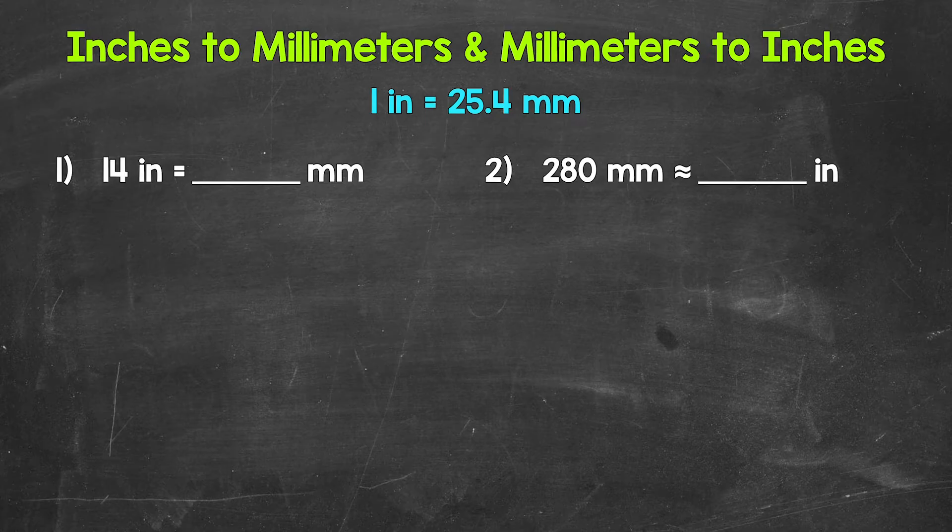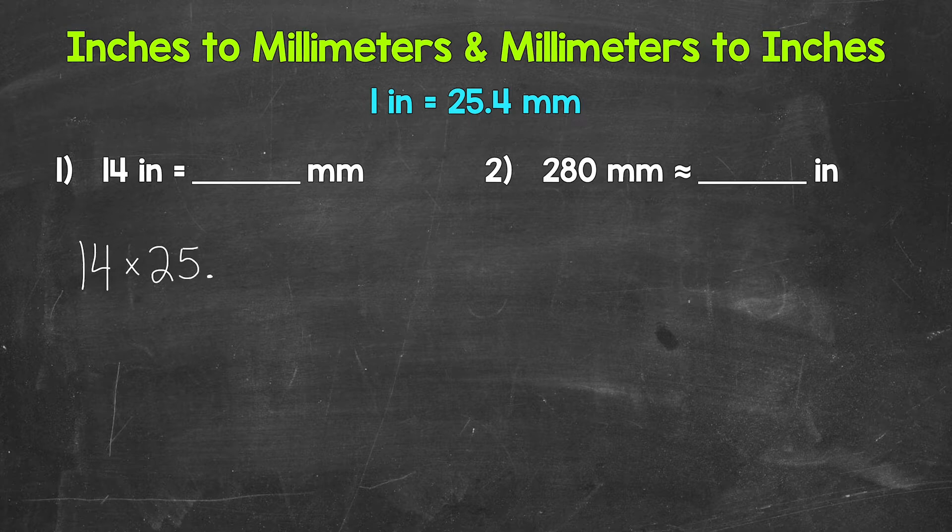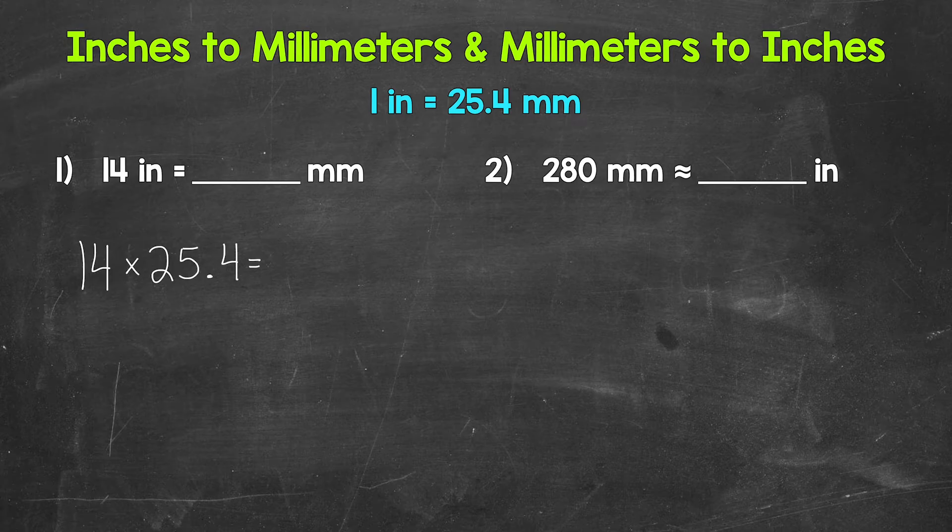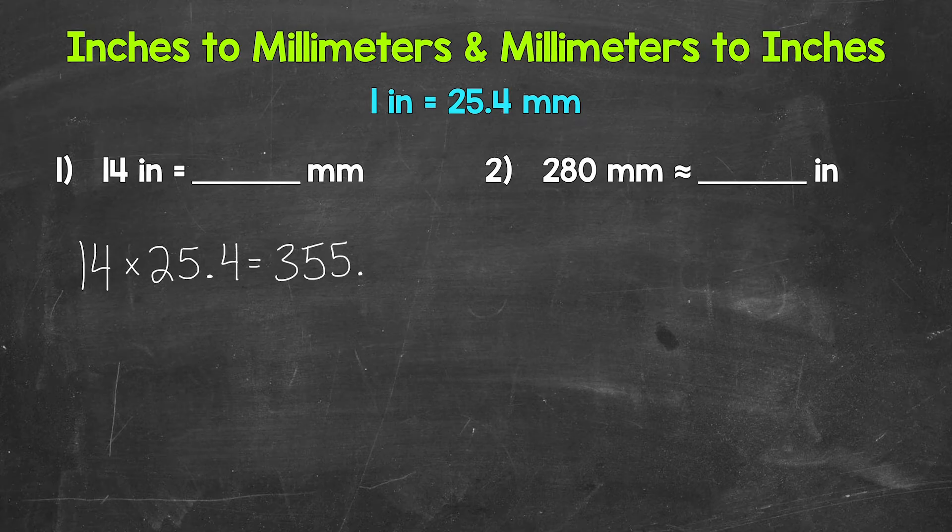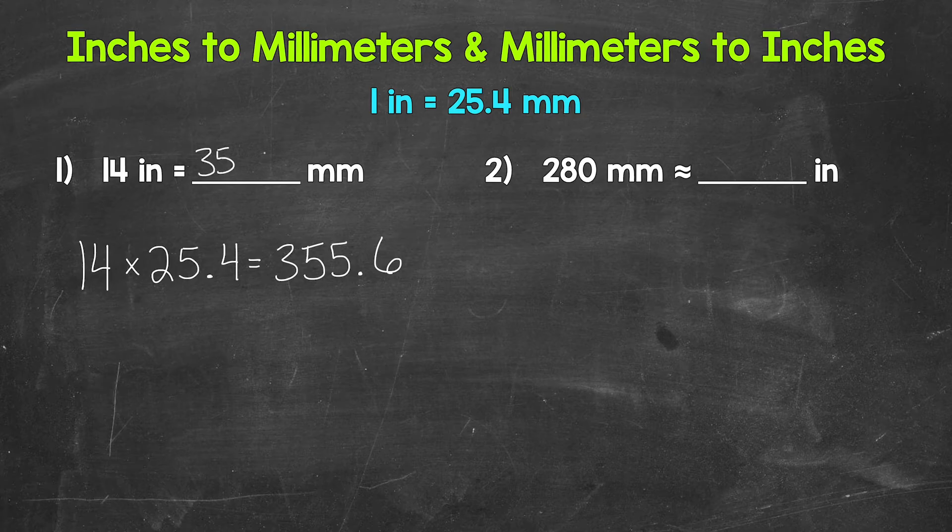Well, each inch equals 25.4 millimeters, so we need to do 14 times 25.4. That's how we convert from inches to millimeters - multiply by 25.4. Now, 14 times 25.4 gives us 355.6. So 14 inches equals 355.6 millimeters.